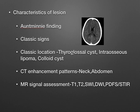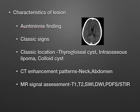Then look at CT enhancement patterns or MR enhancement and signal intensity patterns. In neck or abdomen, a triple phase CT with delayed phase is taken — these enhancement patterns tell you whether enhancement is significant, increasing, or decreasing, or whether fibrous tissue is present. That is why plain CT doesn't give a conclusive diagnosis. On MRI, assess T1, T2, SWI, DWI, PD, fat-sat, and STIR sequences — these characterize the lesion and narrow the differentials.